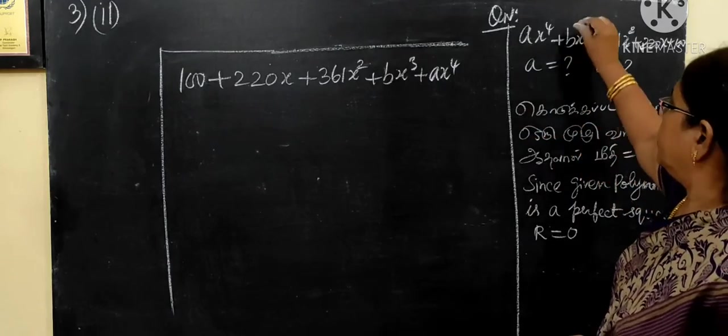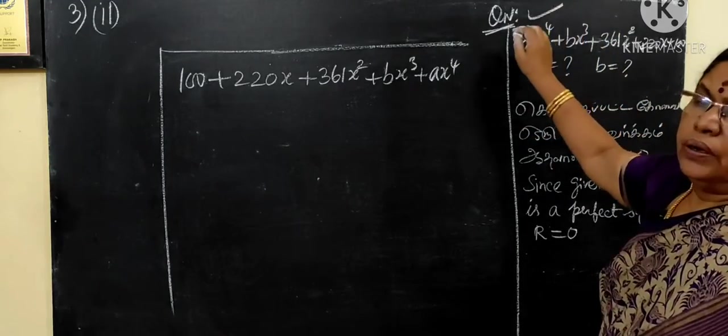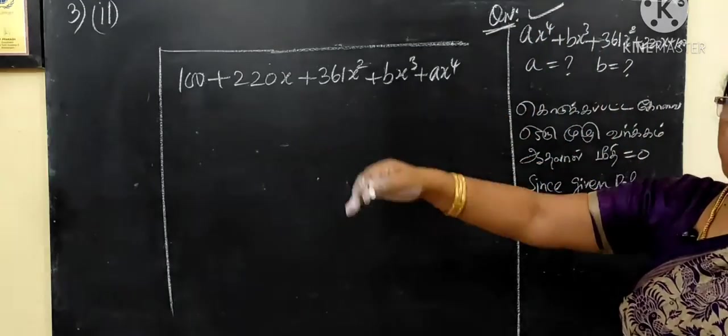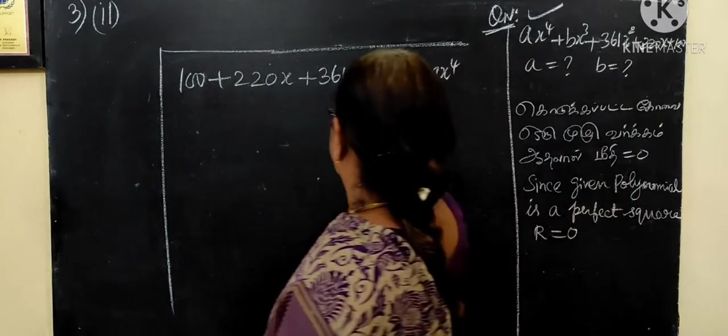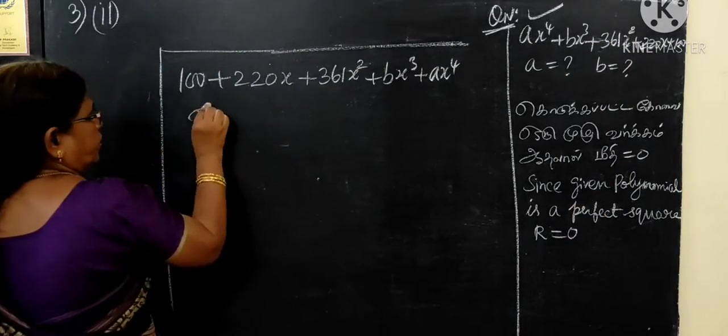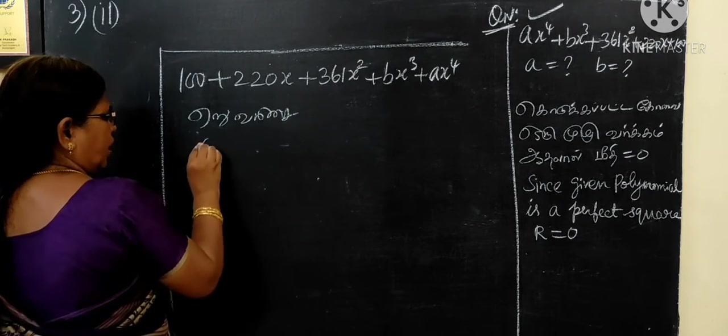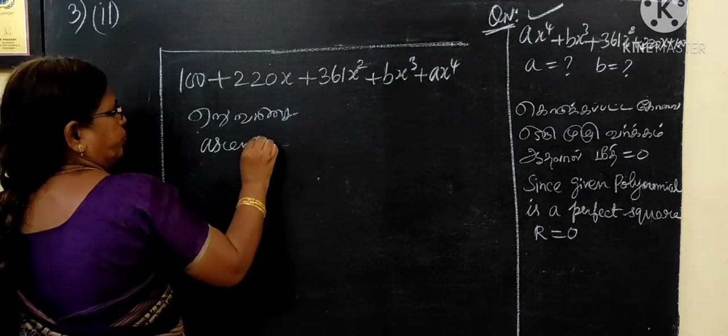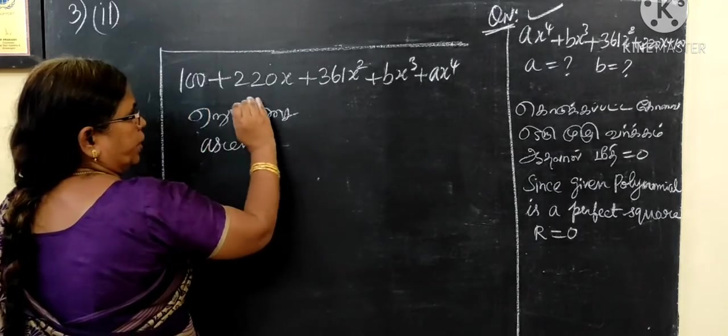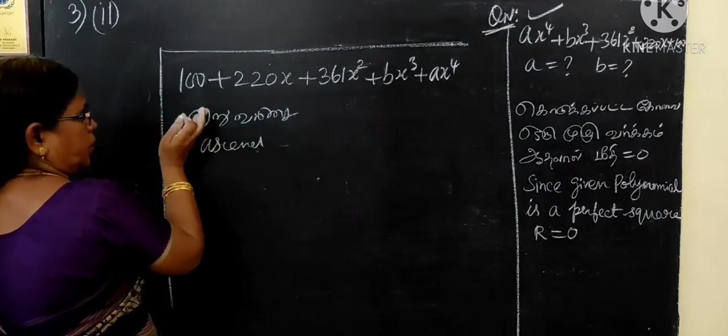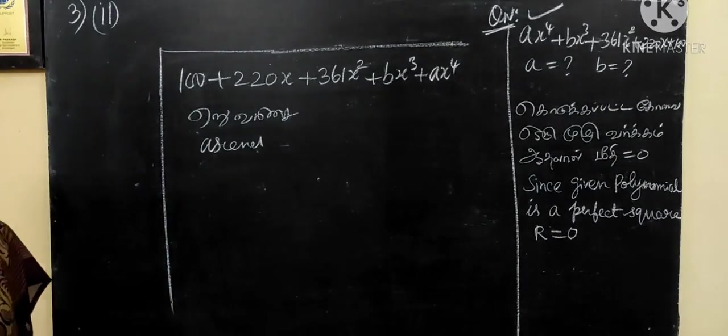Now, the question number 3 is, we can find the value of a and b. We find where are the values of a and b.